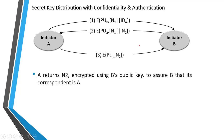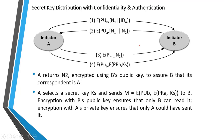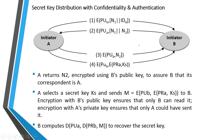In the third step, A returns N2 encrypted using B's public key to ensure B that its correspondent is A. In the fourth step, A selects a secret key Kf and sends a message encrypted using B's public key to B. Encryption with B's public key ensures only B can read the message, and encryption with A's private key ensures only A could have sent it. In this way, confidentiality and authentication are achieved in secret key distribution using asymmetric encryption.